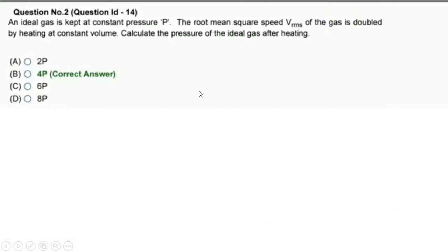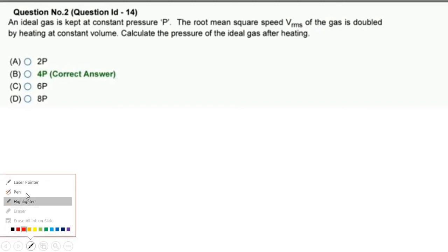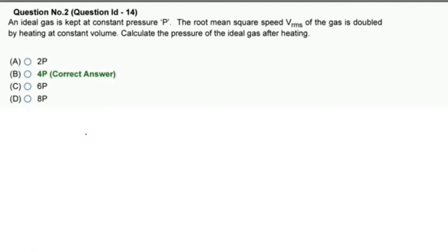This is our first question. An ideal gas is kept at constant pressure P. The root mean square speed V_RMS of the gas is doubled by heating at constant volume. Calculate the pressure of the ideal gas after heating. So let's do it quickly.